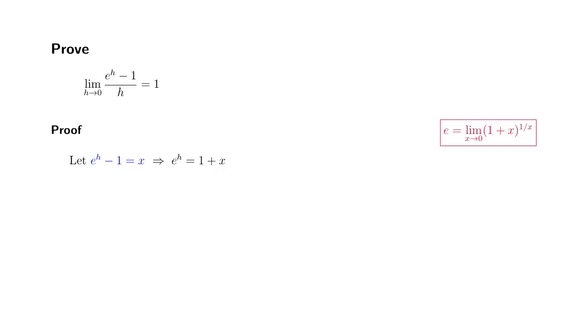By taking the natural log of both sides, we can isolate h. h is equal to natural log of 1 plus x. We know that h is approaching 0. How about x?